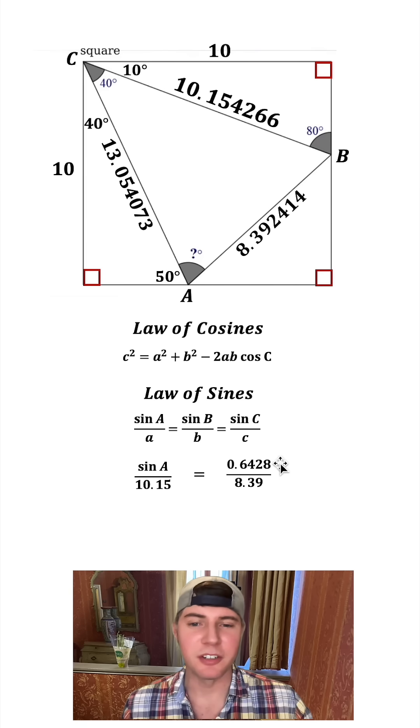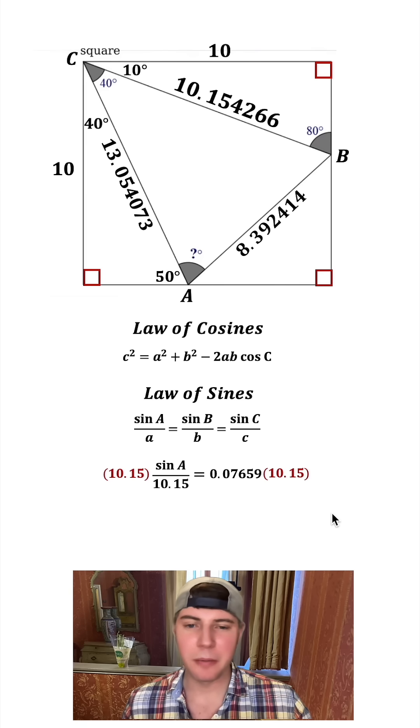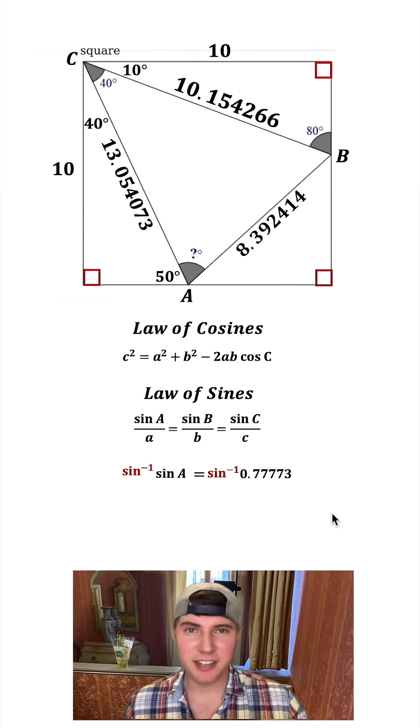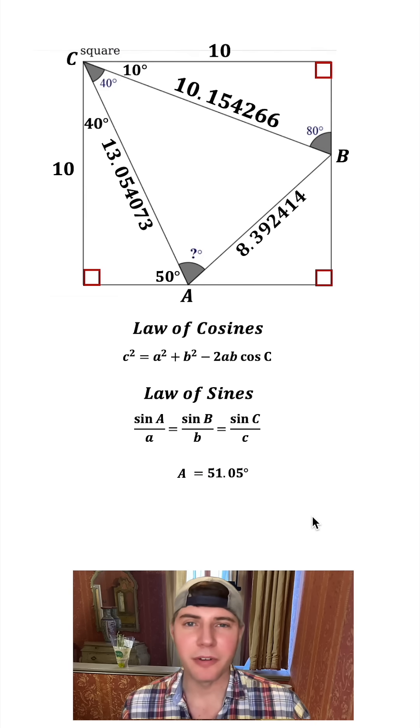Sine of 40 degrees is approximately 0.64. And then this divided by this gives us this. Squish everything together, multiply both sides by 10.15, and we get sine of A is equal to approximately 0.77773. To solve for A, we're going to take sine inverse of both sides. The left-hand side is just going to become A, and on the right-hand side, we've got 51.05 degrees.